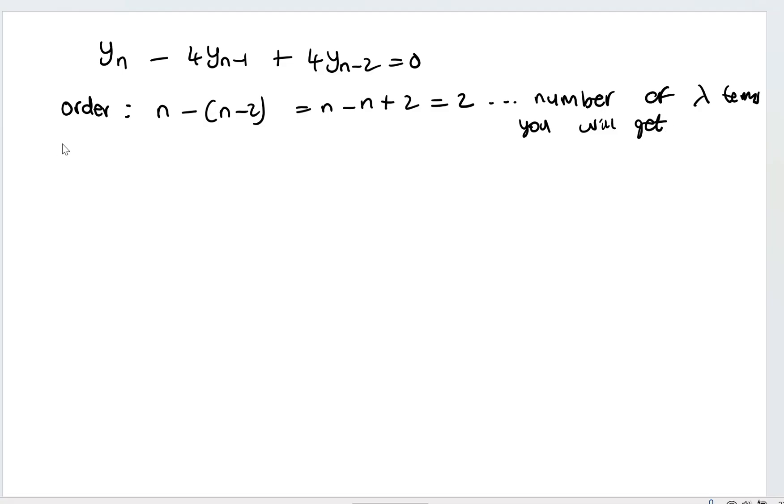And then what is the linearity of this? So is the difference equation linear or non-linear? n is the independent variable, but y sub n is the dependent variable. So if our dependent variable appears only once in each term, meaning nothing has a squared or has a power attached to it or multiplied to each other, then this is called linear.